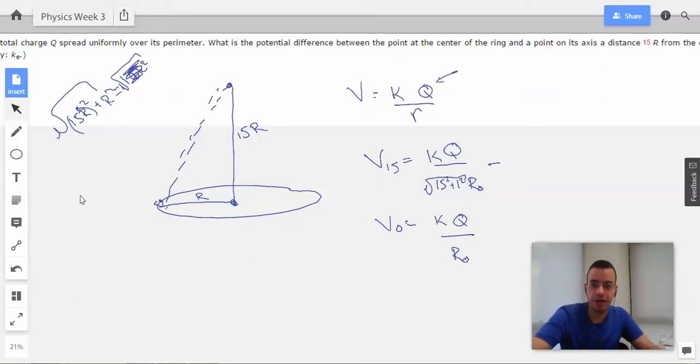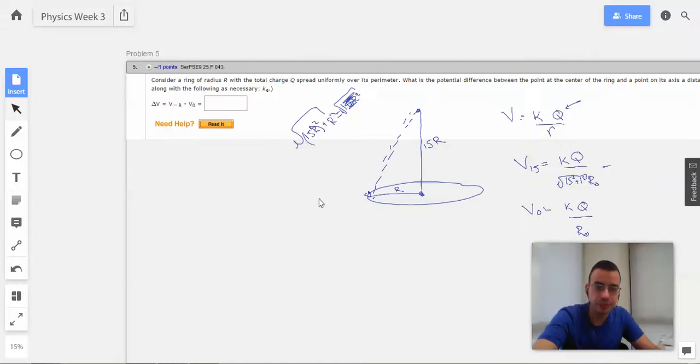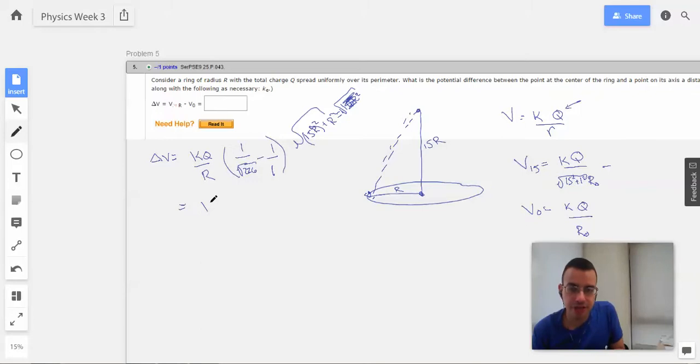So then, going back over here, we're going to have delta V equals K, Q, one over square root of 226 R₀ minus one over one R₀. Okay? To simplify this a little bit.